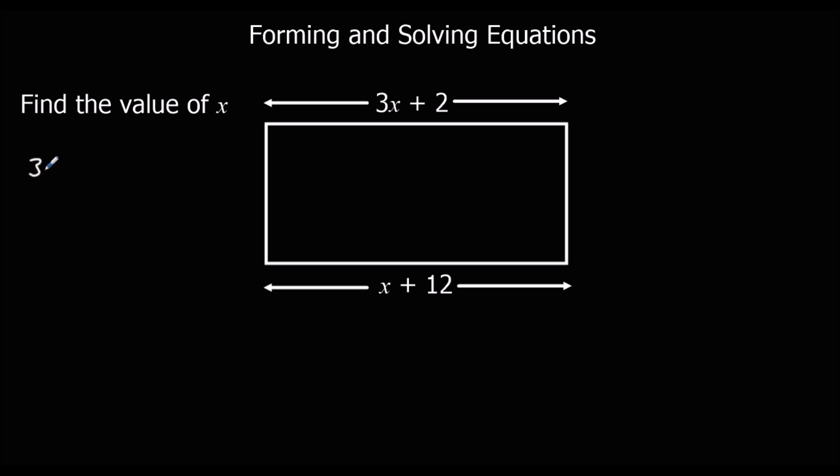Again, we form our own equation and then solve it. We're going to take away the smallest x, that's 1x, from both sides of the equation to keep it balanced. Doing the same thing to both sides keeps it balanced.